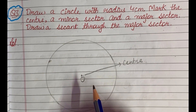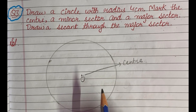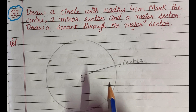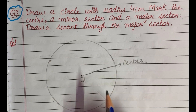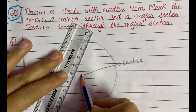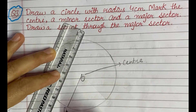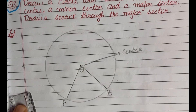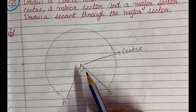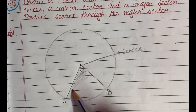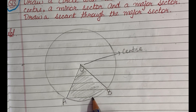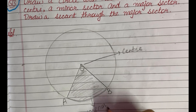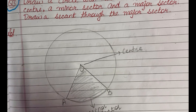Next, mark the minor sector. A minor sector is a region of the circle enclosed by a minor arc and two radii. First mark the radii OA and OB. The minor sector is the region enclosed by the minor arc AB and these two radii OA and OB.